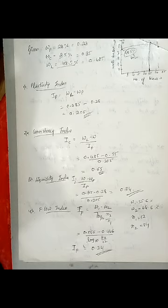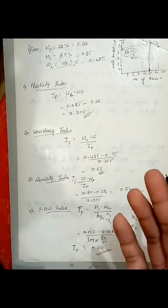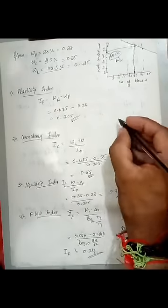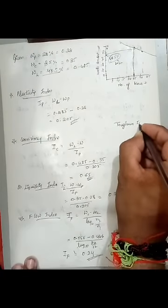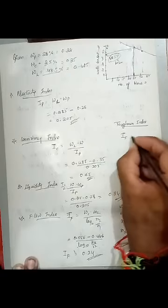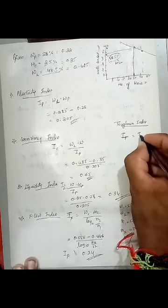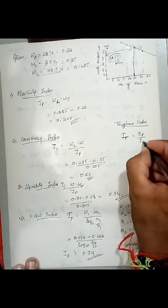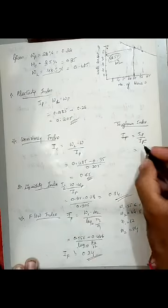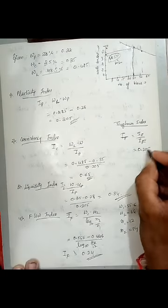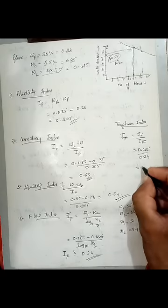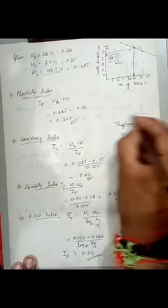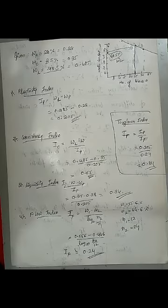So these are all the values calculated through the problem. This is the way you need to solve. Even if you want toughness index you can find it out. I'll just write it here. Toughness index, IT, is equal to IP by IF. IP is 0.205, IF is 0.24, so I get it as 0.84. You can even write this. Thank you.